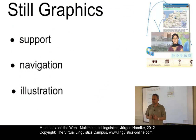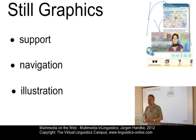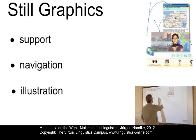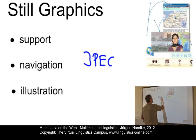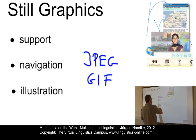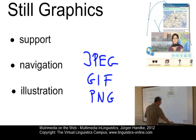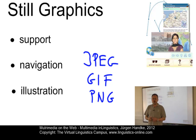Mostly, these graphics are bitmap graphics in formats designed to match the requirements of the internet — for example, the JPEG format, the GIF format, or the PNG format. These are common formats used for the representation of graphics on the web.